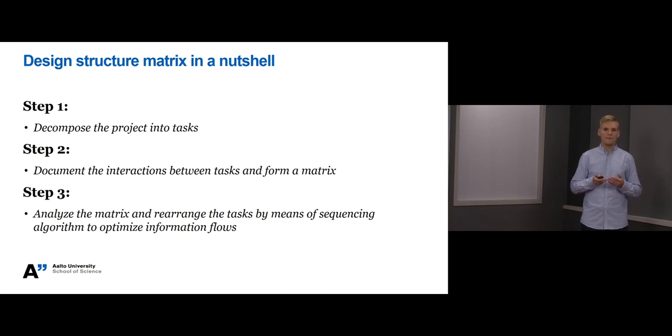Forming a Design Structure Matrix consists of three main steps. First, you decompose the project into tasks. Second, you document the interactions between tasks and form a matrix. Third, you analyze the matrix and rearrange the tasks by means of sequencing algorithm to optimize information flows.